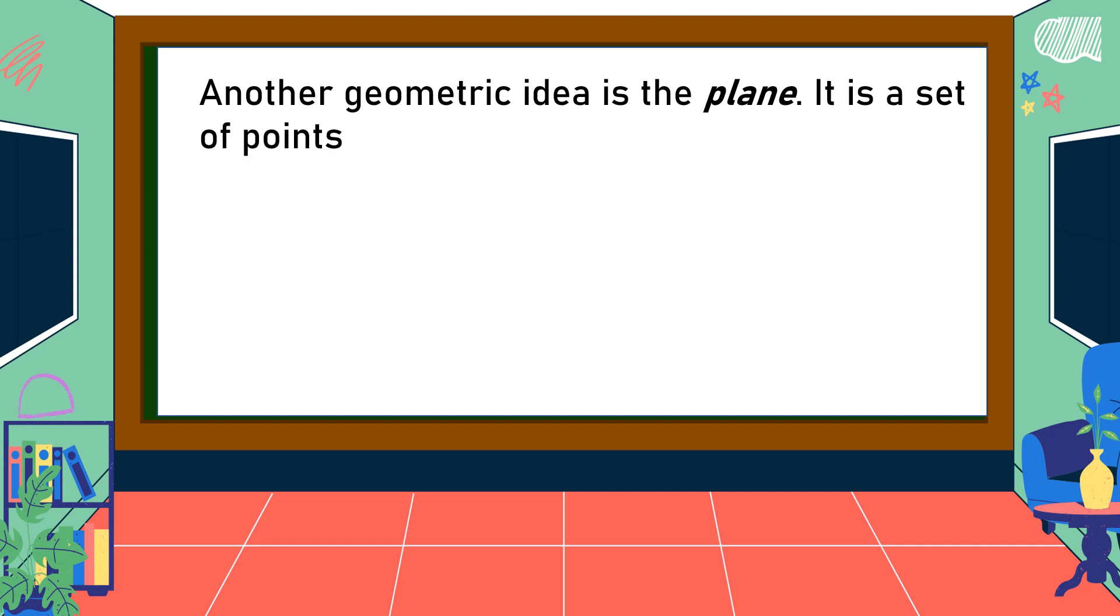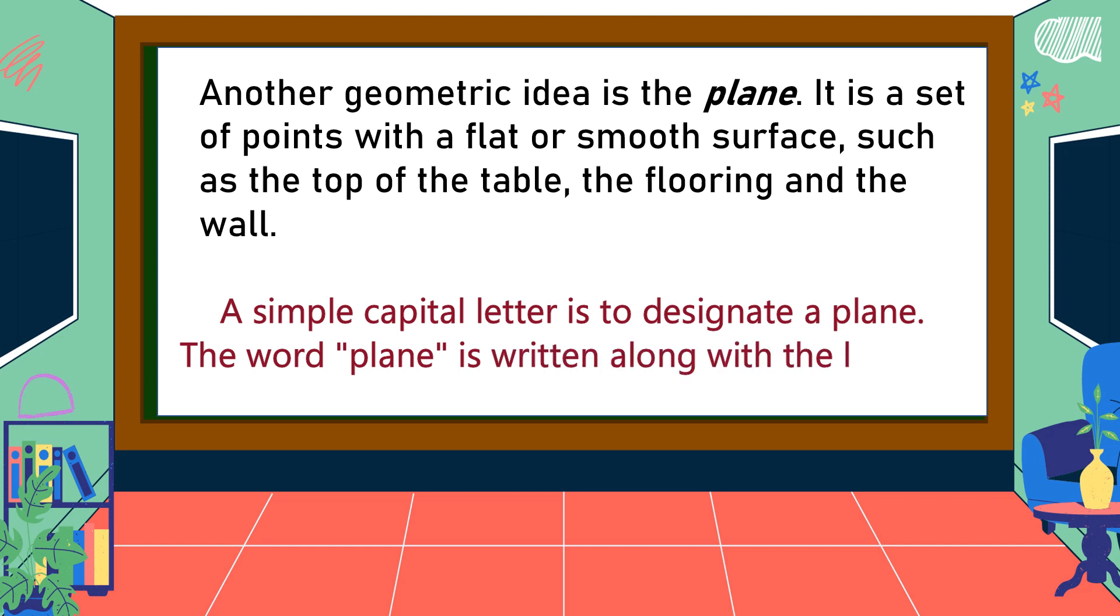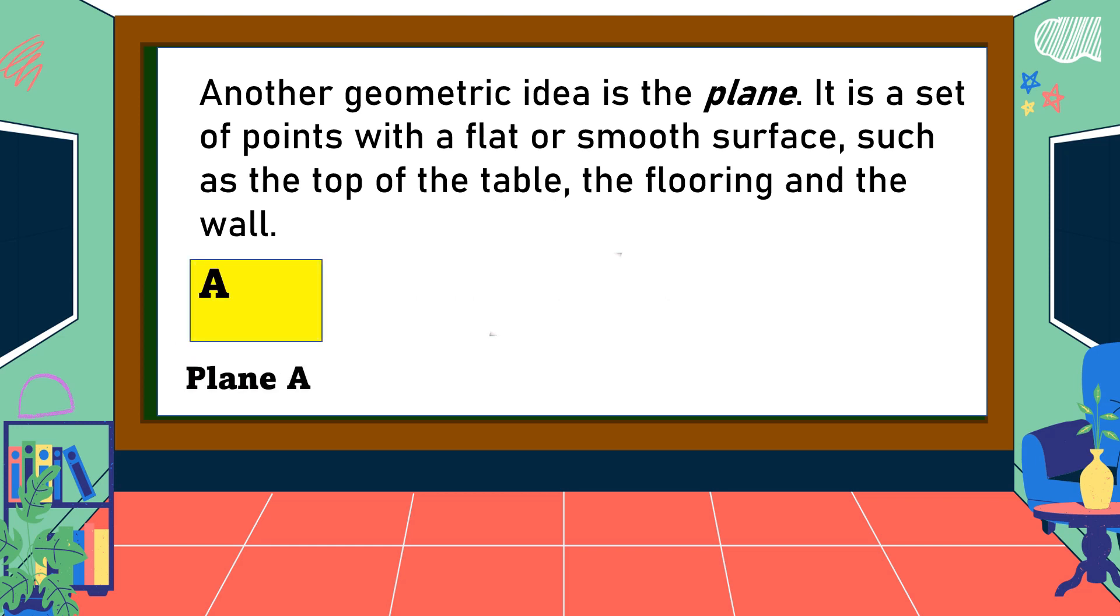Another geometric idea is the plane. It is a set of points with a flat or smooth surface, such as the top of the table, the flooring, and the wall. A simple capital letter is used to designate a plane. The word 'plane' is written along with the letter as plane A, plane B, or plane C.